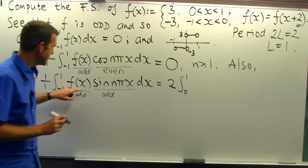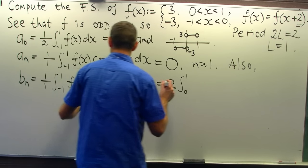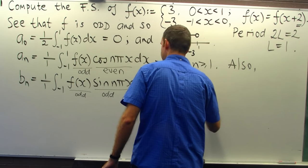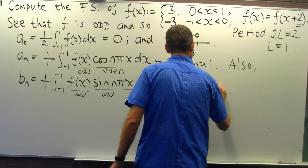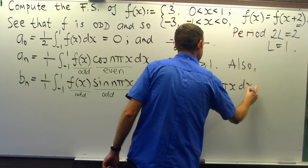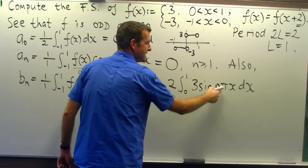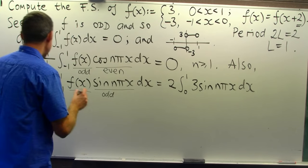So on this interval, 0 to 1, f of x is 3. So we replace f of x with 3 sin n pi x dx. Now, 3 is just a constant so I can take it out the front and I want to integrate sin n pi x.